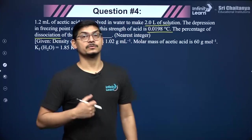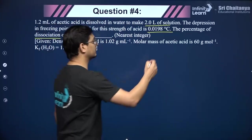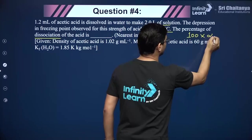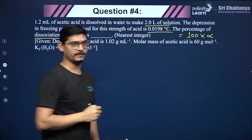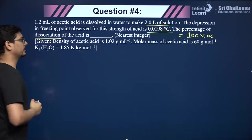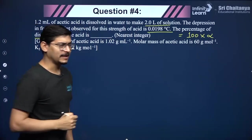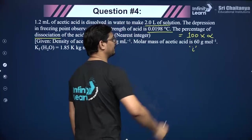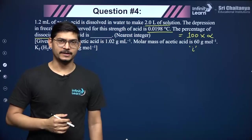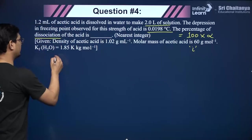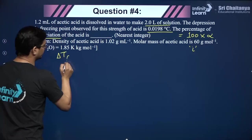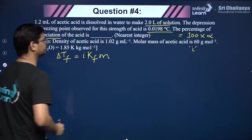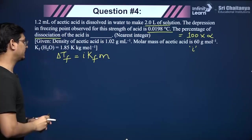The percentage dissociation is 100 × α. I can calculate α from ΔTf = i·Kf·m. Rearranging: i = ΔTf / (Kf × m). To save calculation time, accumulate the numbers and do all calculations in one go. This gives the Van't Hoff factor, from which you solve for α and then multiply by 100.